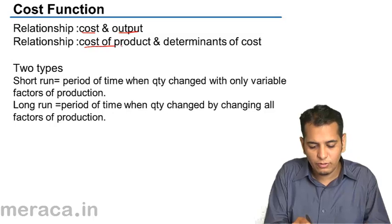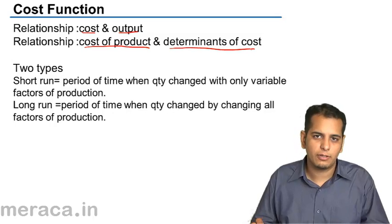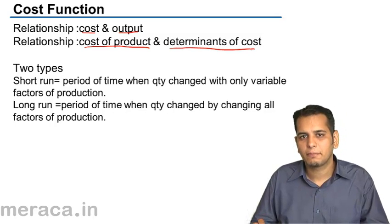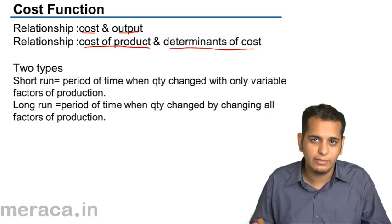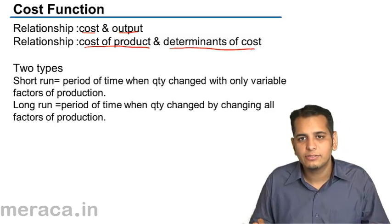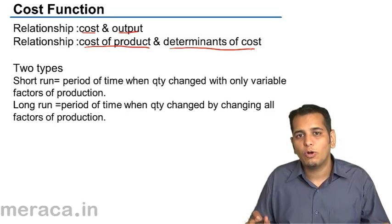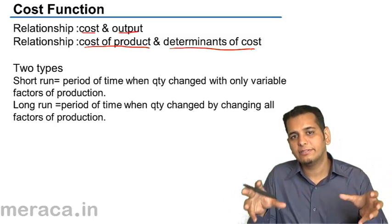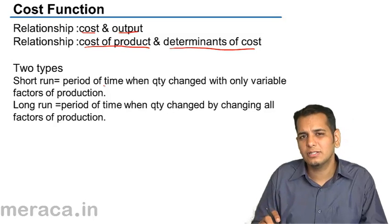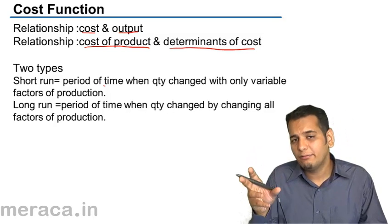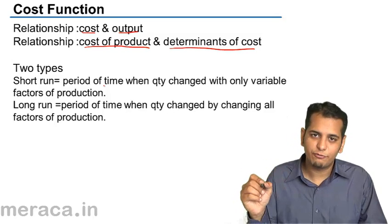Cost function is also the relation between the cost of a product and its determinants. The determinants of cost of product include the cost of wages, the cost of rent, the cost of interest, and profit. Cost function is derived from the production function, which was covered in the video on the theory of production.